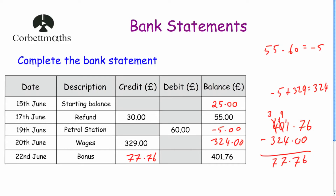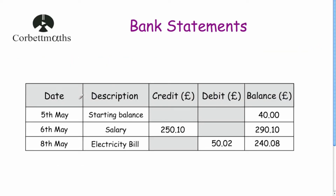Whenever you're reading a bank statement there will typically be five columns: date, description, credit, and debit. You might also see 'money in' and 'money out', but the proper terms are credit — money put into the bank account — and debit — money taken out. And then there's the balance. Thank you.